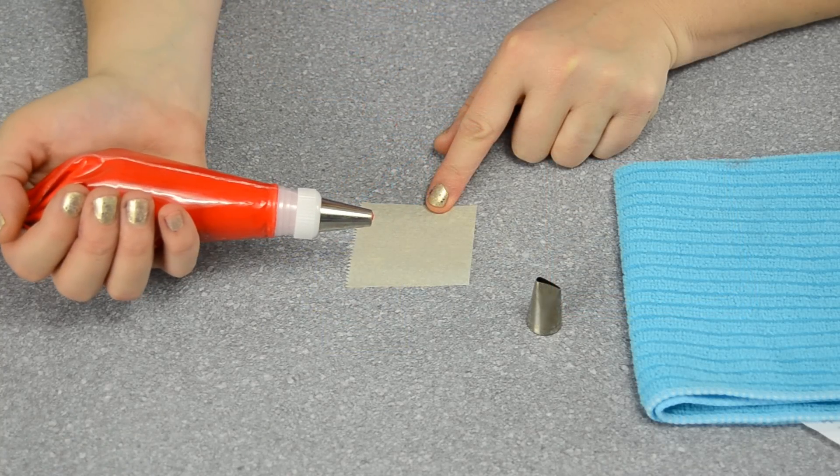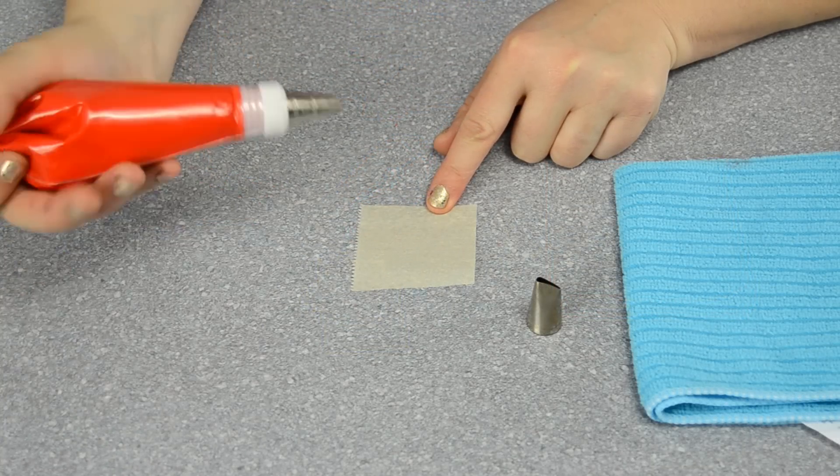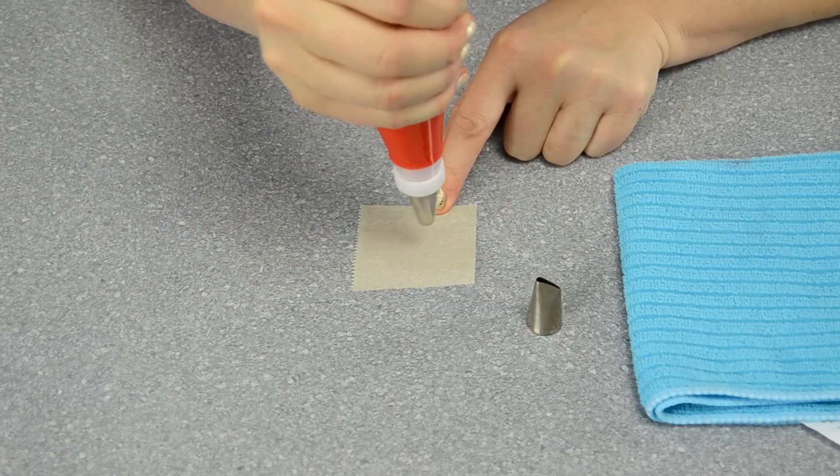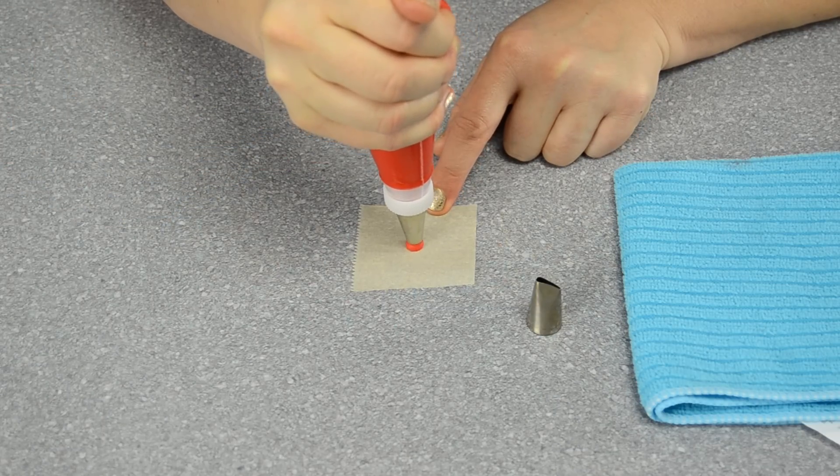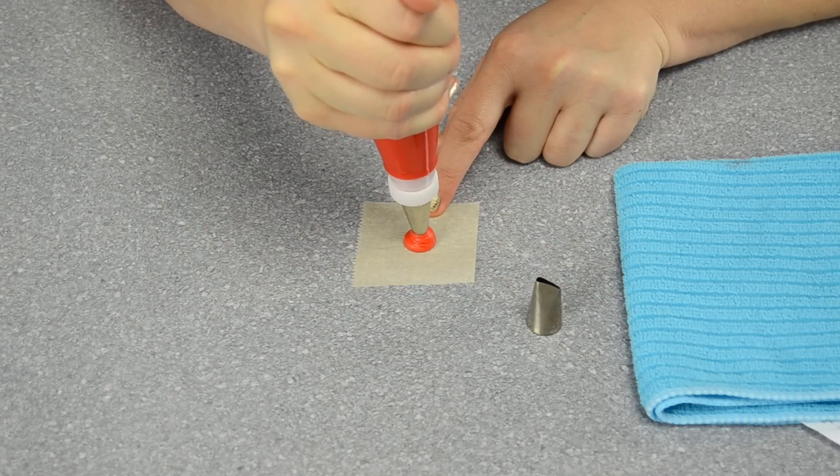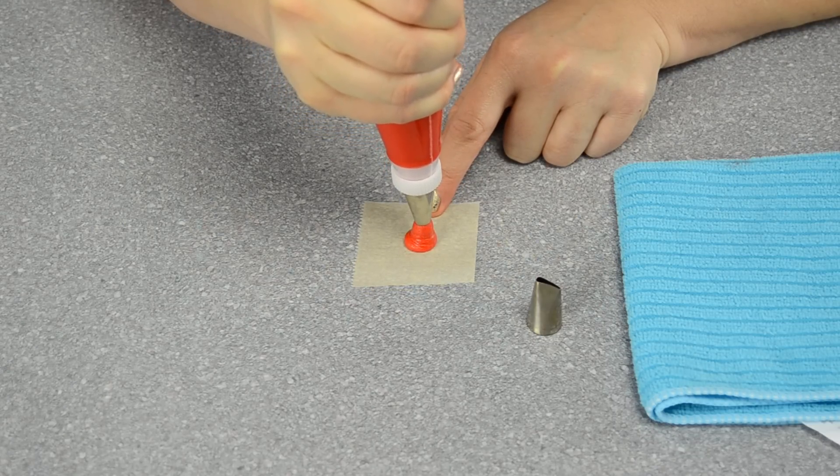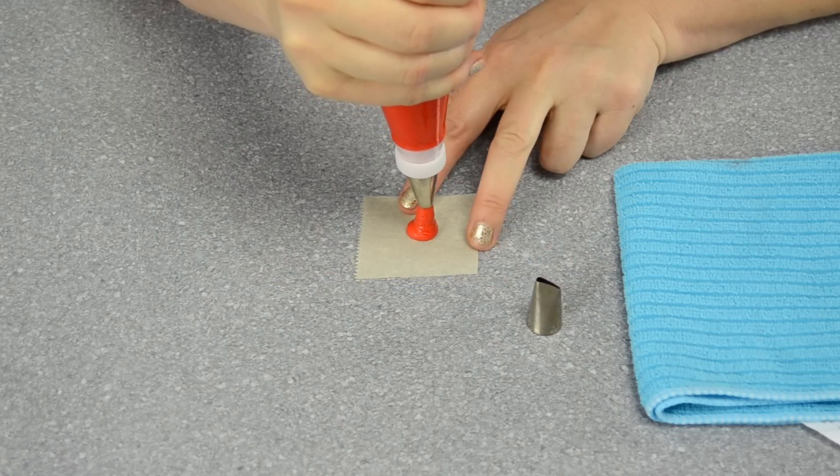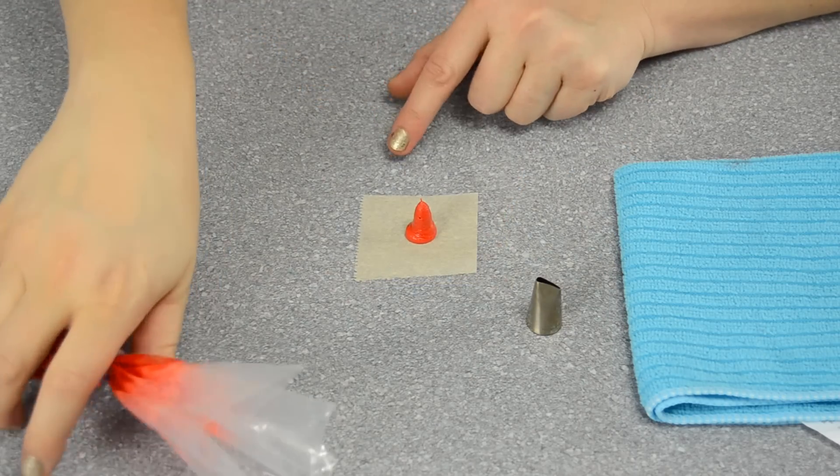To start out the ribbon rose, we need to have a base. Using the number 12 tip, I'm going to squeeze nice and gently until it's about a centimeter in diameter, or about half an inch. Just keep coming up, coming up, and then you're going to stop pressure and squeeze and release.